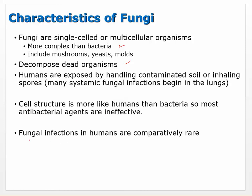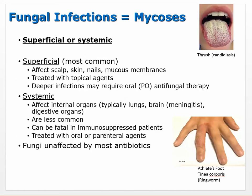Fungal cell structure is more like humans than bacteria, so most antibacterial agents are ineffective. Fungal infections in humans are pretty rare — it's only in immunocompromised people that a fungal infection in the lungs can happen. Getting it on the skin is different. A superficial example is ringworm — tinea corporis — which is a type of fungus. Superficial infections can affect scalp, skin, nails, and mucous membranes and are treated with topical agents.